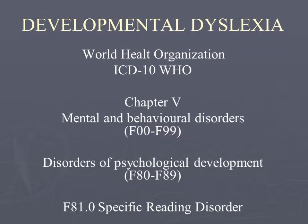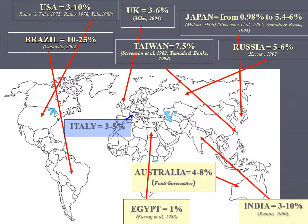Developmental dyslexia is a clinical condition characterized by reduced lexical performance as a function of age. It is a worldwide problem found in countries with very different languages and graphical systems. Its prevalence ranges from 1% in Egypt up to 20-25% in Brazil. In general, its average prevalence in the world is about 3-5%.